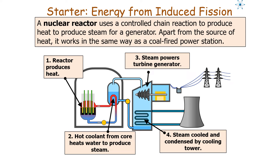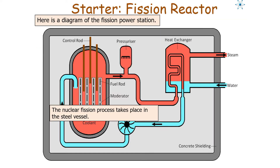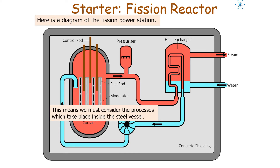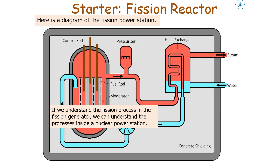A nuclear reactor uses a controlled chain reaction to produce heat, to produce steam for a generator. Apart from the source of heat, it works in the same way as a coal-fired power station. If we look at the actual reactor vessel itself in the fission power station, the nuclear fission process takes place in this steel vessel. Understanding the processes inside this vessel helps us understand the fission process in a nuclear power station.